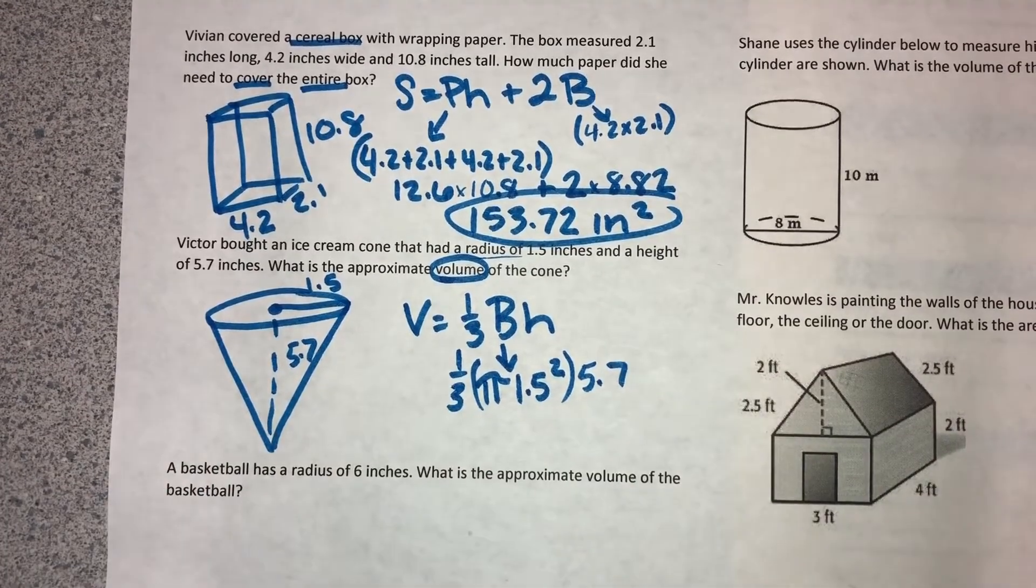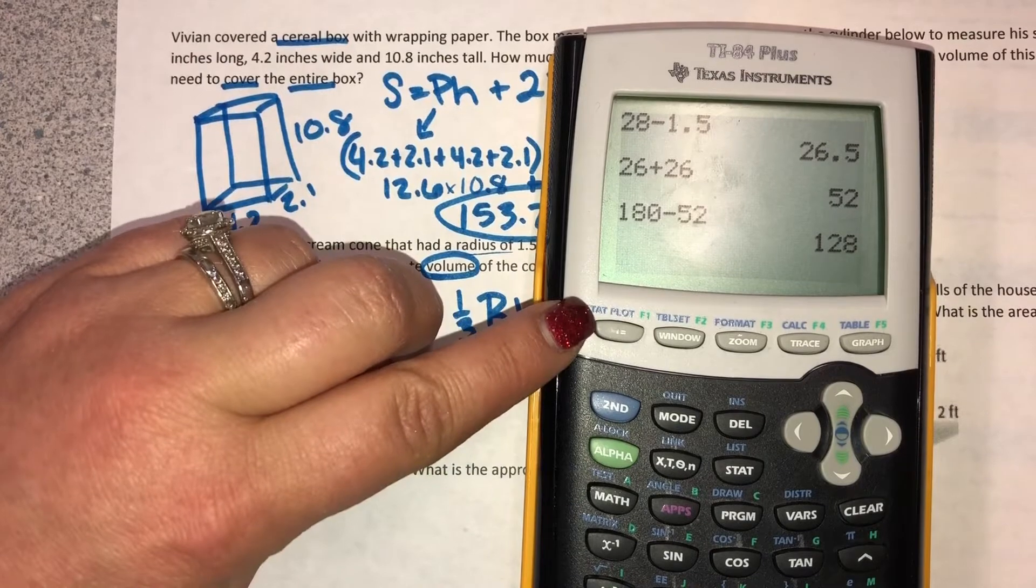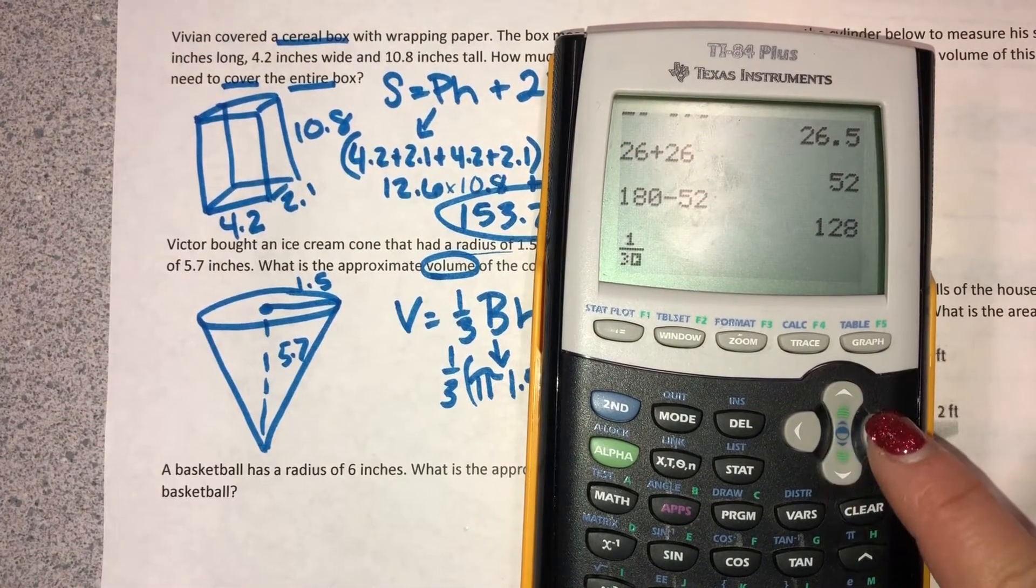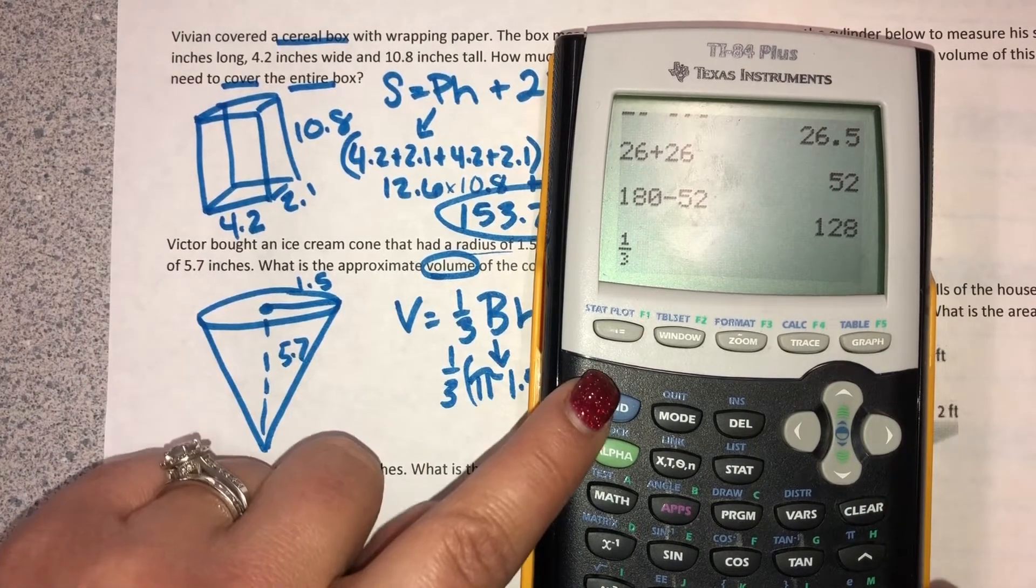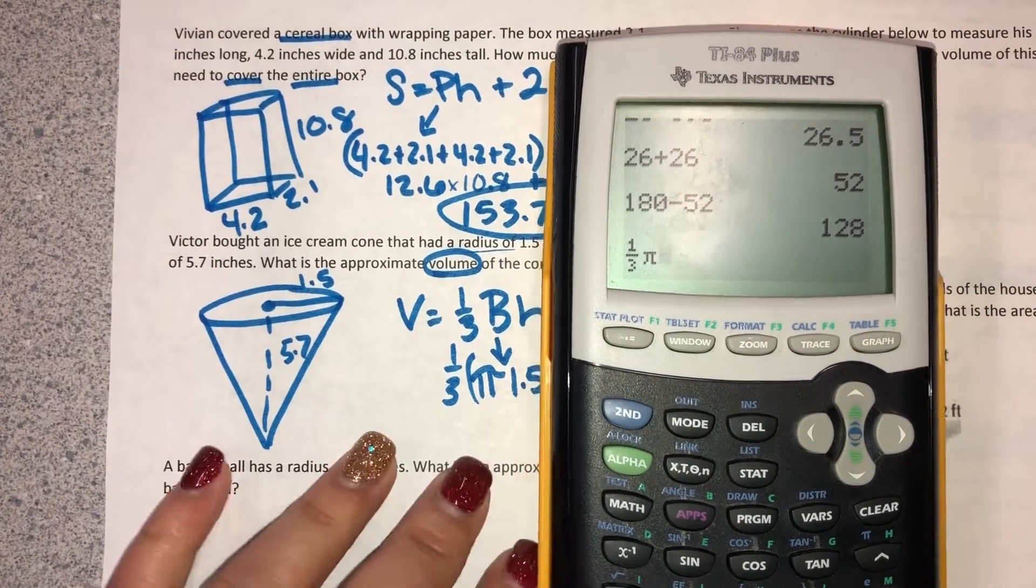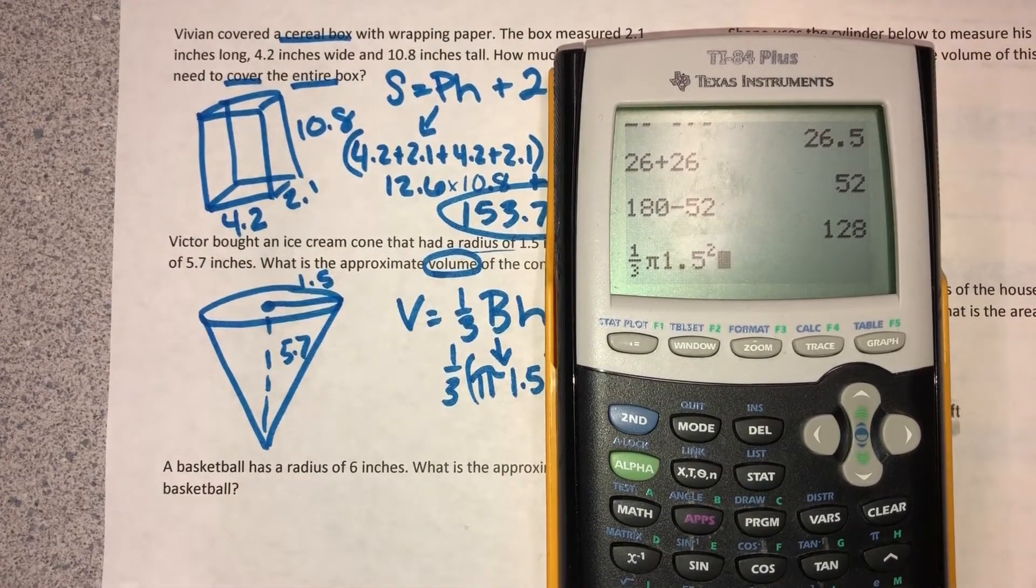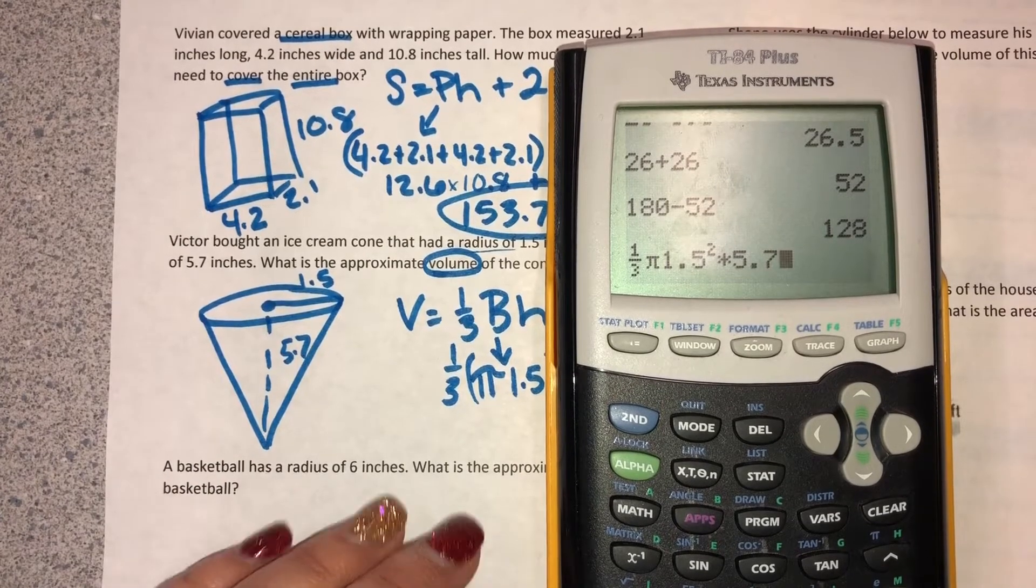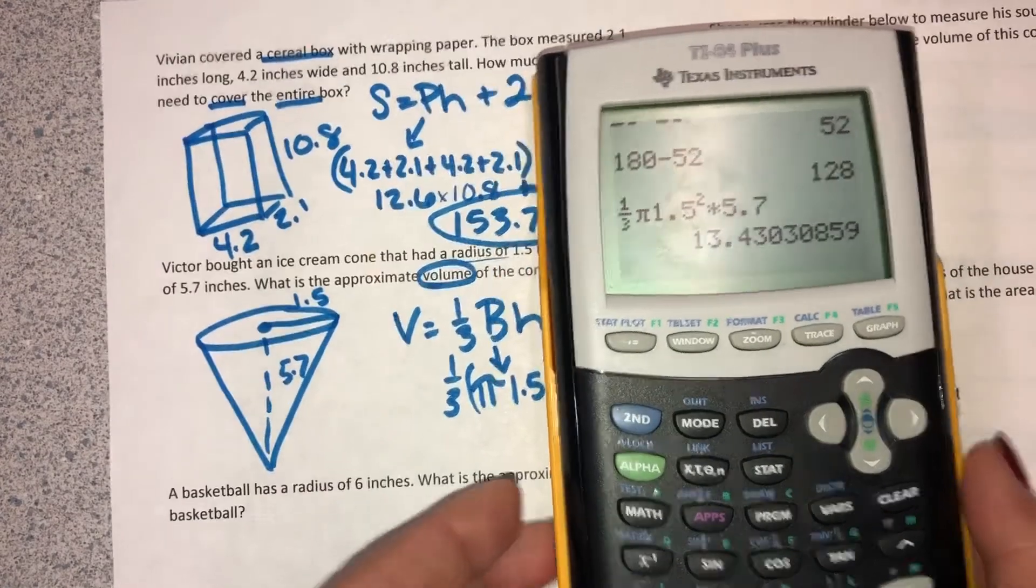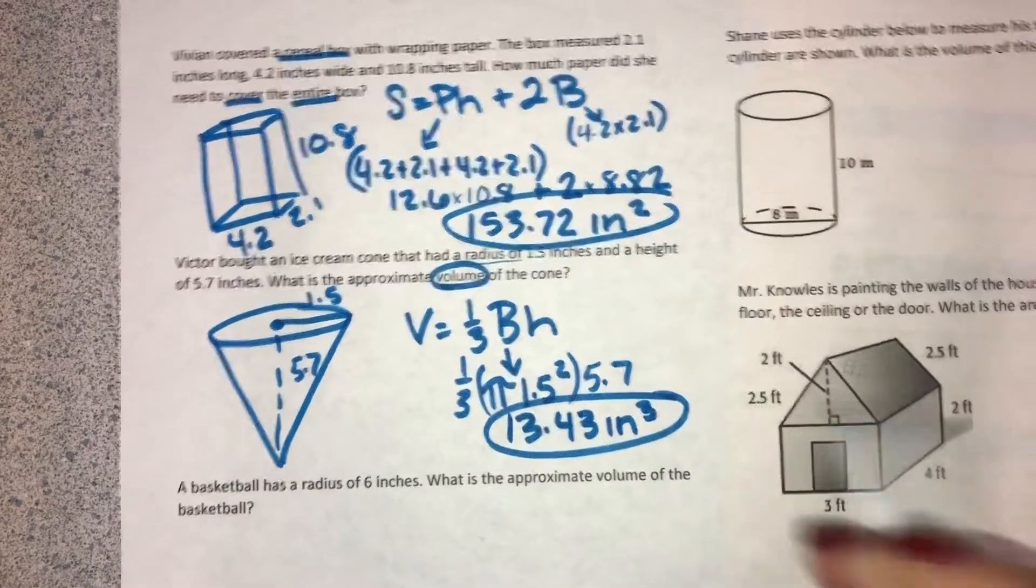And in case you forgot, on your calculator to do your fractions, it's alpha Y equals number 1 - one third. And then in case you forgot pi, it's second and then the up arrow right below clear. Pi R squared, just like we did yesterday, times the height. And so that is the volume of this cone: 13.43 inches cubed. Since it's volume, those are cubic inches.